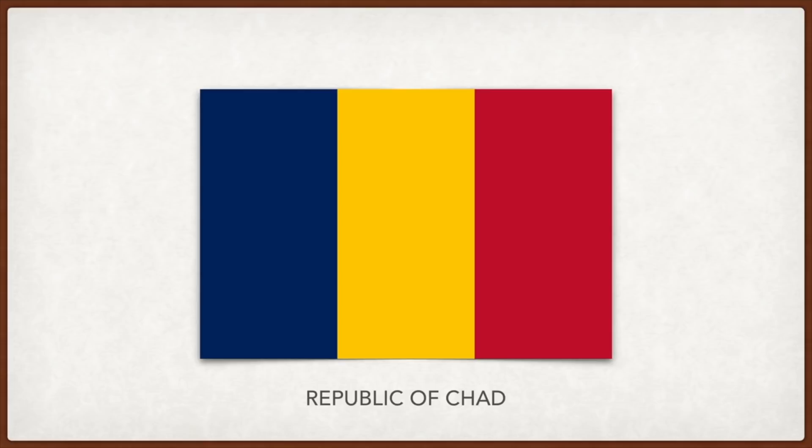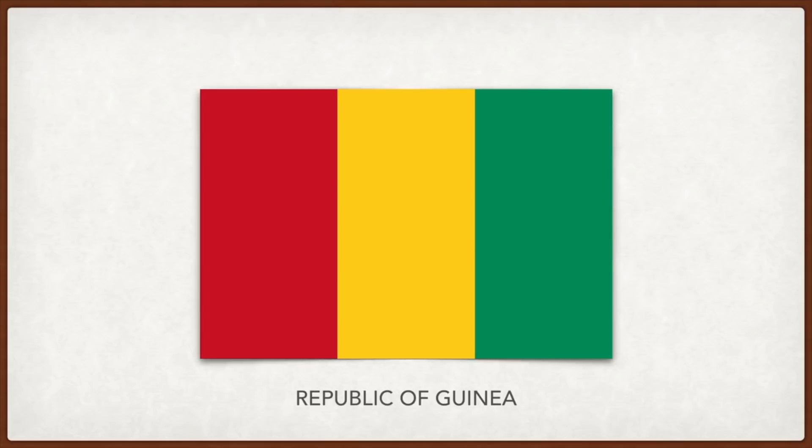Guinea: red symbolizes the blood of martyrs who died from slavery and wars, yellow is for the sun and the country's riches, and green is for the country's vegetation.